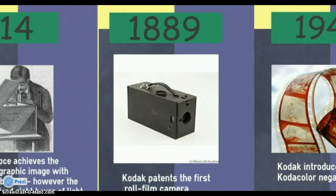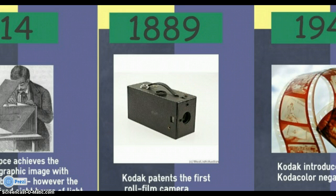Fast forward to 1889 and Kodak rolls out its first roll film camera. This was a great advance in technology because it allowed you to take more than one photo before reloading your film. Previously, all cameras had used single plates or single exposure film that then required you to reload your camera after every use.